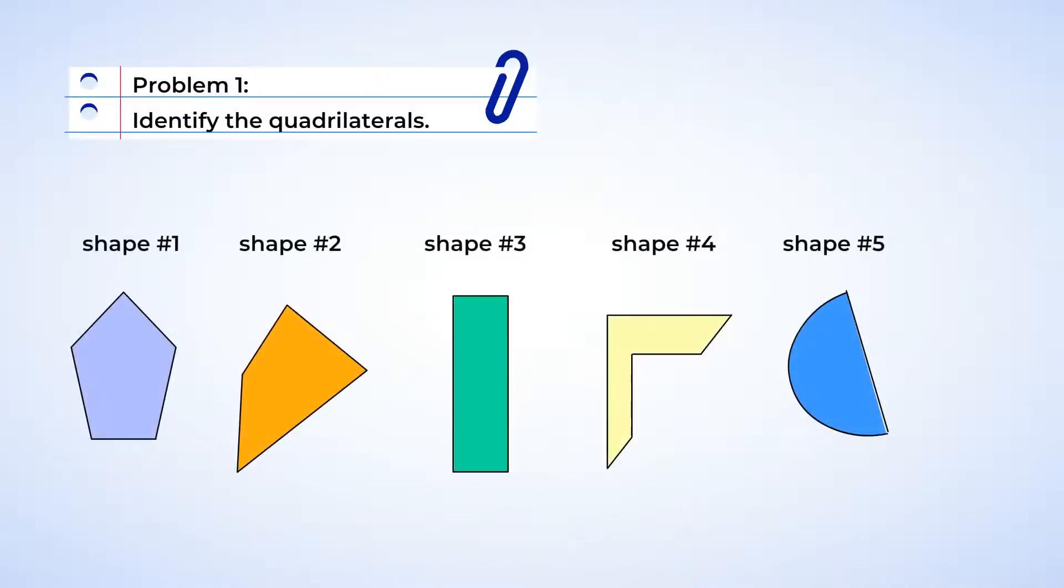Identify the quadrilaterals. Alright, let's start with some practice identifying quadrilaterals. We've just learned that quadrilateral is another fancy word for a shape with four straight sides. Now let's count the sides of these shapes to find out if they are indeed quadrilaterals. Starting with shape one, counting the number of sides, we can see that this shape has five sides. This is not a quadrilateral.